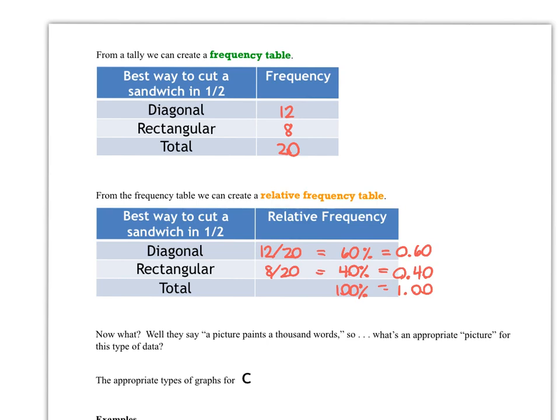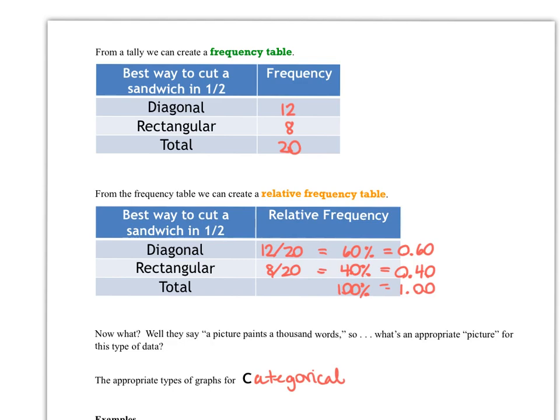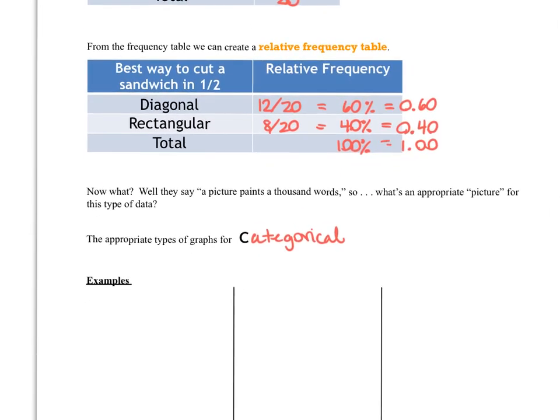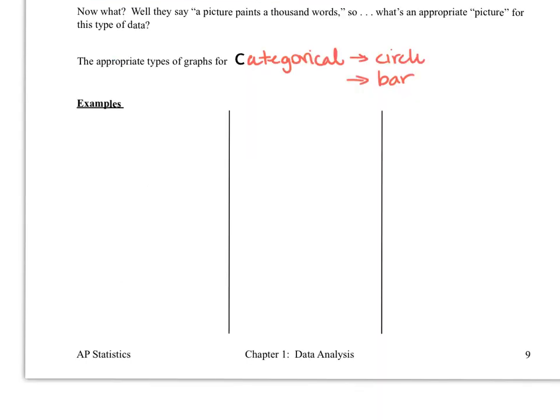So what happens next? Well, as they say, a picture paints a thousand words. So we would want to put this particular data into a picture. And we're going to remember that categorical data can best be graphed either in a circle graph or in a bar graph. So we're going to create one of each. We're going to create a circle graph, we're going to create a bar graph, and then we're going to create something else that we haven't really talked about yet, but it'll make sense when you see it. And that's called a segmented bar graph. That's kind of a cross between the two.